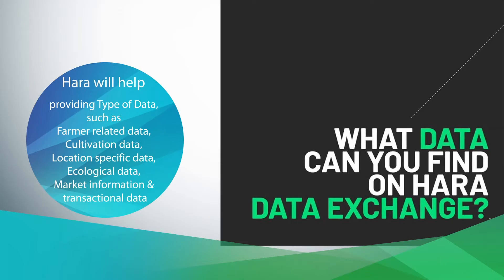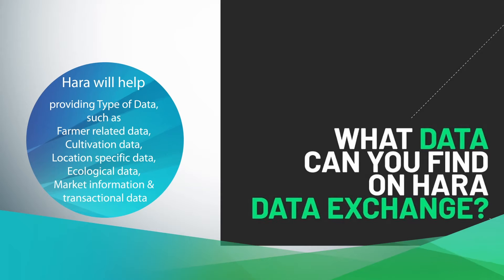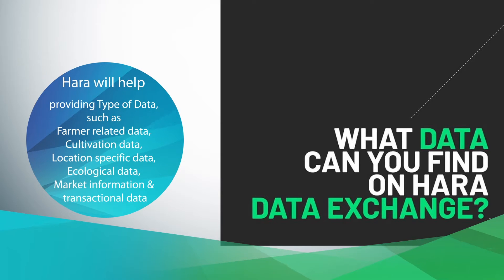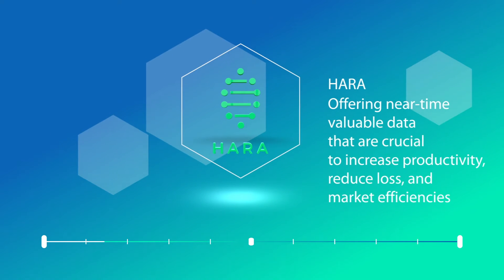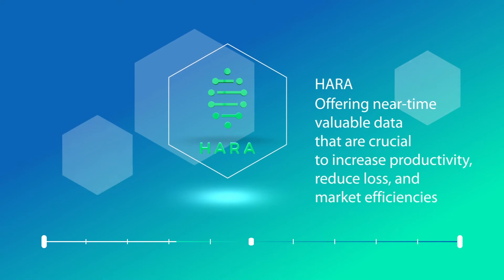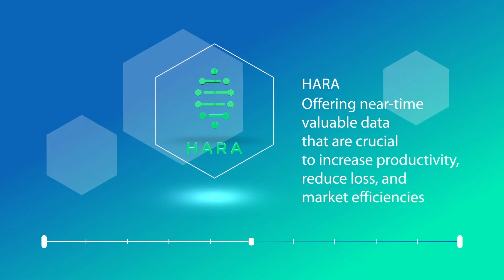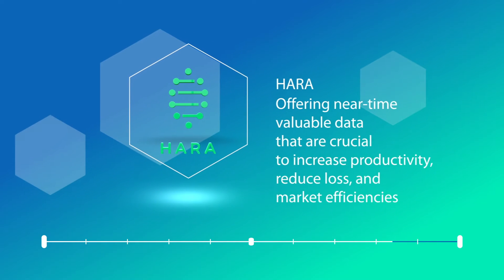HARA will help solve problems in the agriculture and food sector by providing types of data such as farmer-related data, cultivation data, location-specific data, ecological data, and market information and transactional data — offering near-real-time valuable data that are crucial to increase productivity, reduce loss, and improve market efficiencies.